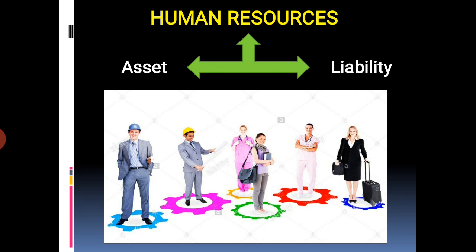Population is an asset for the economy rather than a liability. It becomes human capital when investments are made in its healthcare, training and education. Land and capital are made useful by human capital, which is why human capital is superior to other forms of capital. The existing productive skills and abilities of the working population are known as 'people as resource', and this productive nature helps develop the GNP of a country.